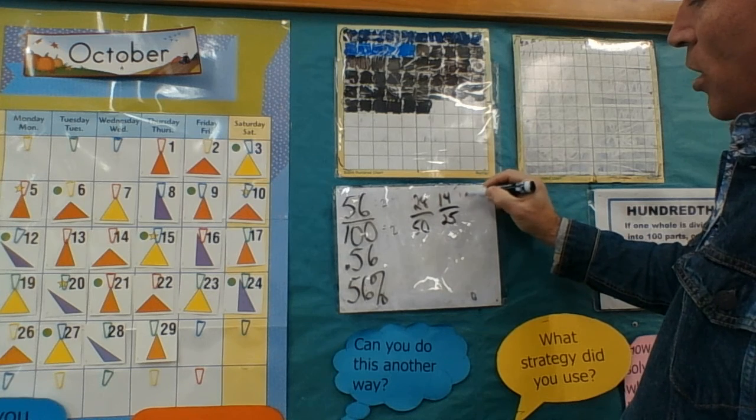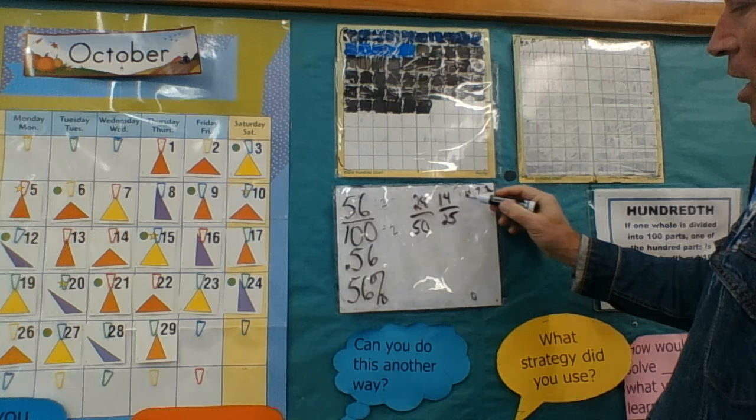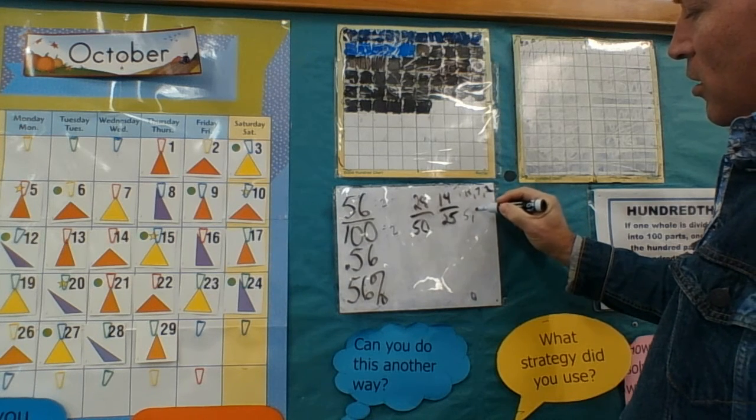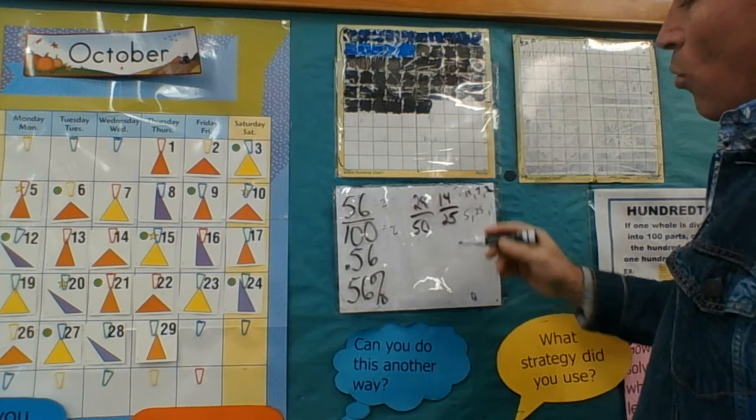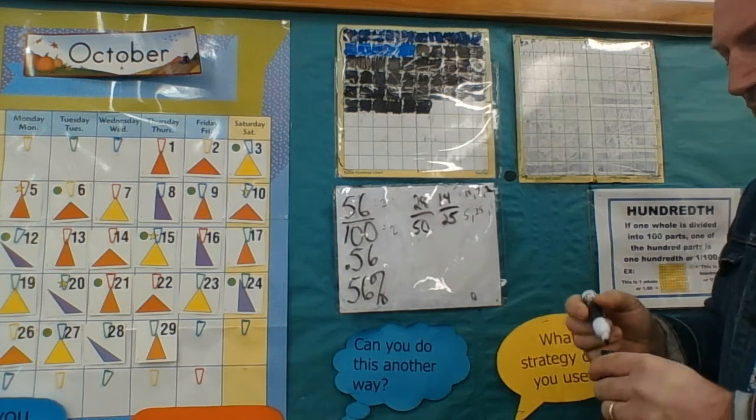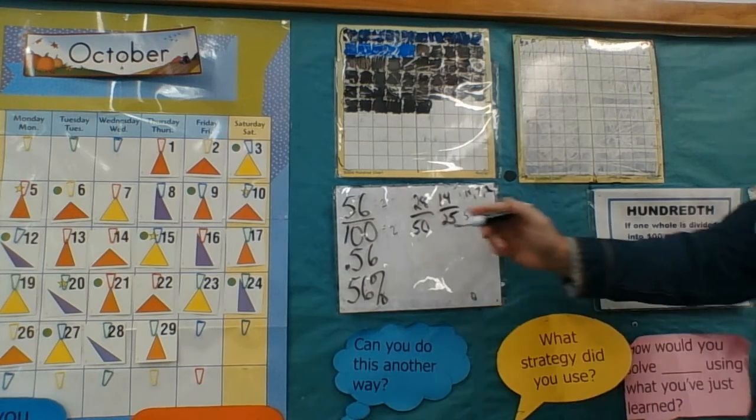Now I might list my factors: 1, 14, 7, 2—any of those are factors. I have 5, 25, and 1. Do I have any common factors? No. Well then 14 twenty-fifths is our simplest form.